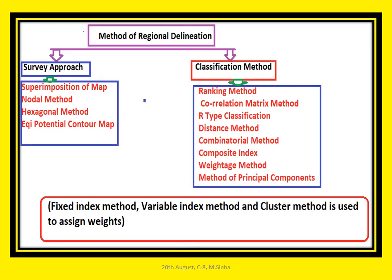Now come to the various methods of delineation. There are many methods, but the most relevant and widely used ones are segmented into two parts: first is the survey approach, and second is the classification method. The survey approach may be direct field survey or text-based survey, segmented into four parts: superimposition of map, nodal method, hexagonal method, and equipotential contour map.